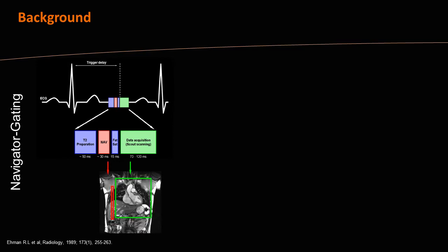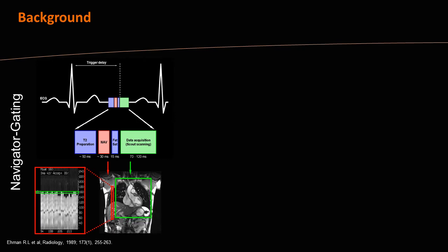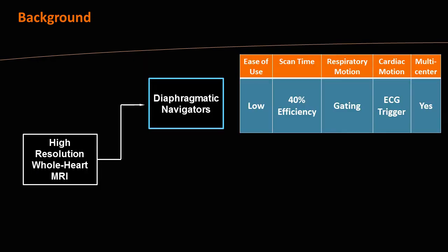At each cardiac cycle, not only is a certain amount of data acquired, but also an extra diaphragmatic navigator — an external acquisition at the liver-lung interface. This allows us to see at each heartbeat the position and displacement of the liver due to respiratory motion. An acceptance window is used so that only data acquired at a certain respiratory position, usually end expiration, are accepted; others are rejected and reacquired. The acceptance rate is quite low, so scan time is long with efficiency around 40%. Ease of use is not great, but this technique has been around for more than 20 years with large patient studies and multi-center trials.